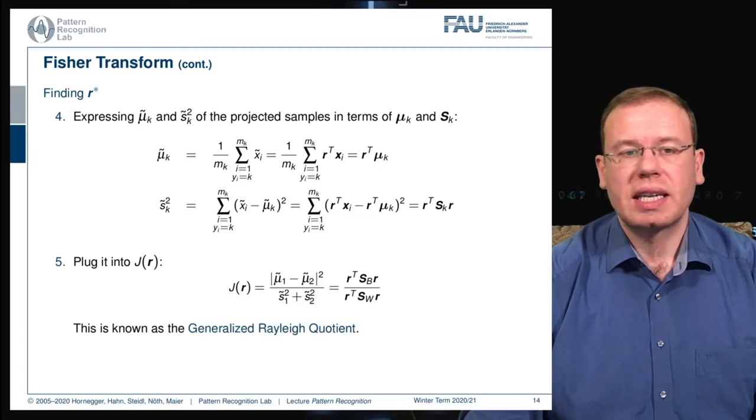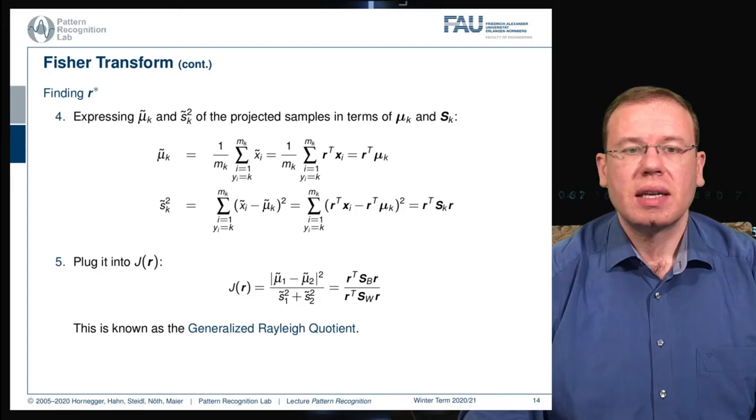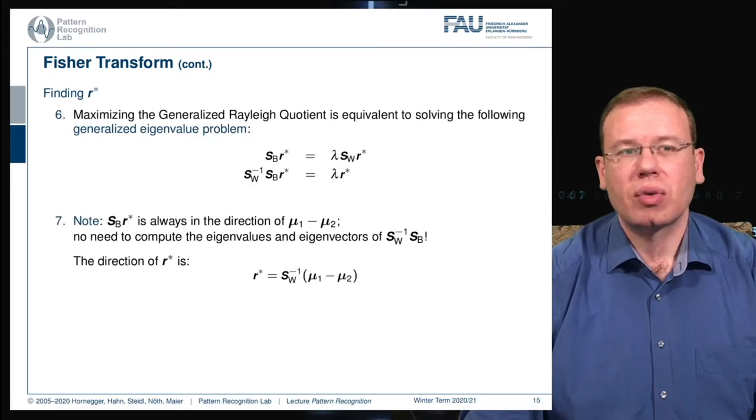Note that this is also known as the generalized Rayleigh coefficient. This can be used in order to find R^T. We maximize the generalized Rayleigh coefficient and this is equivalent to solving the following generalized eigenvalue problem: S_B times R* equals λ S_W times R*.